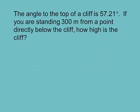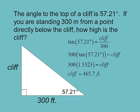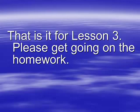The angle to the top of a cliff is 57.21°. You're standing 300 meters from a point directly below the cliff. How high is the cliff? Tangent of 57.21° = cliff/300. Multiply both sides by 300: cliff = 300 × tan(57.21°) ≈ 466 feet. All these application problems work the same way — you won't always use tangent, sometimes sine or cosine. That wraps up Lesson 3. Get going on the homework.